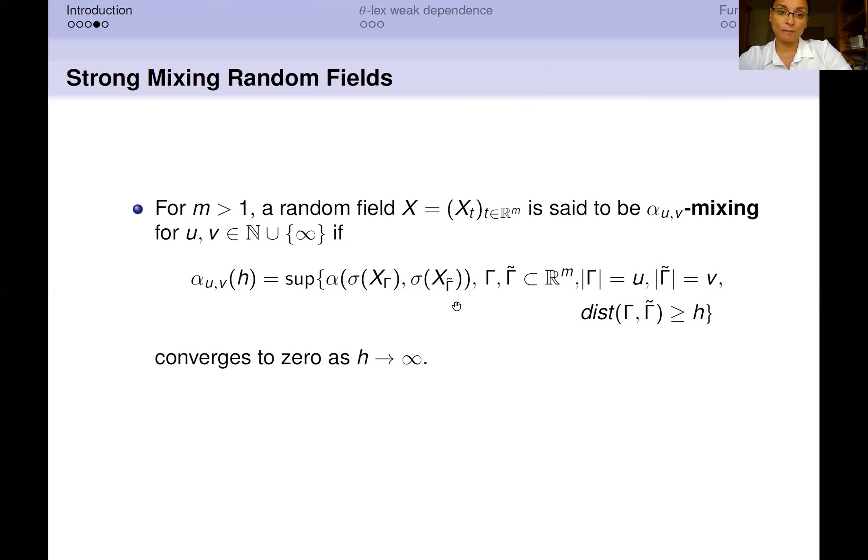Inside the supremum, we find the strong mixing coefficient that we have defined in the previous slide, computed this time on two σ-algebras generated by two different marginals of the random field, indicated with X_Γ and X_Γ̃, referring to the marginals determined with respect to the indices contained in the sets Γ and Γ̃.